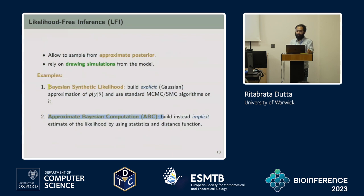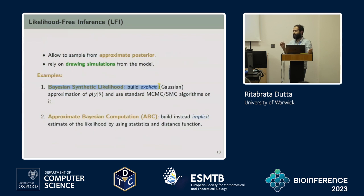Another popular method is Bayesian synthetic likelihood. I will show that this is a special case of what we are going to be doing. But the problem with Bayesian synthetic likelihood is that it can converge to a parameter value which has nothing to do with your true parameter value. The reason is that it's not a correct scoring rule. So we'll just point to that.